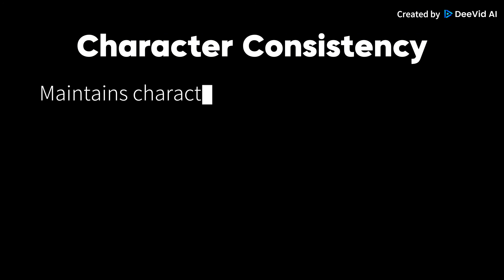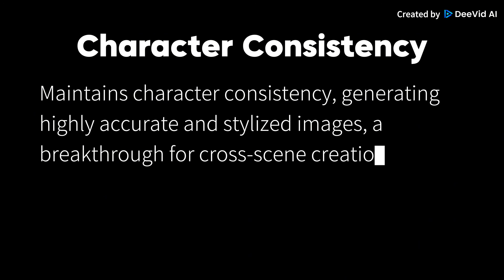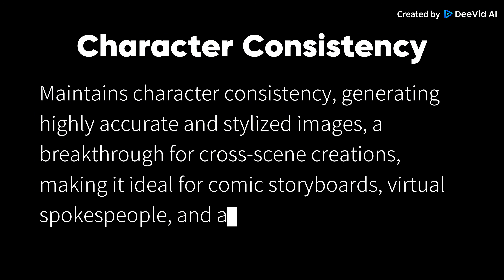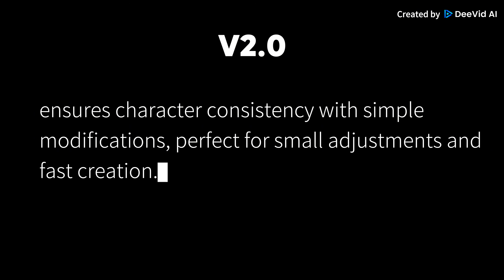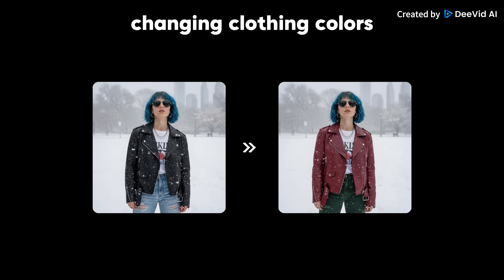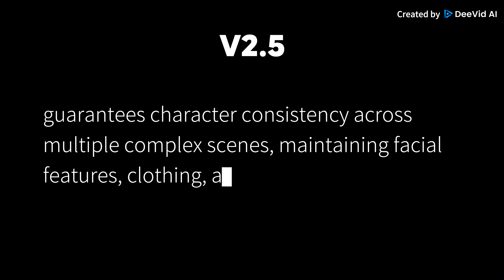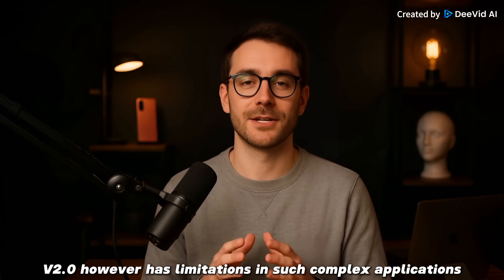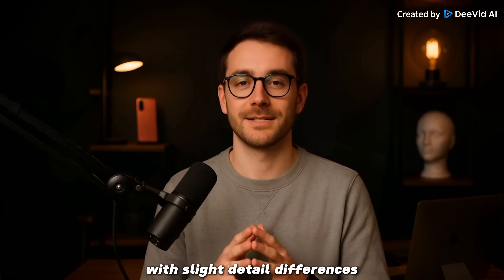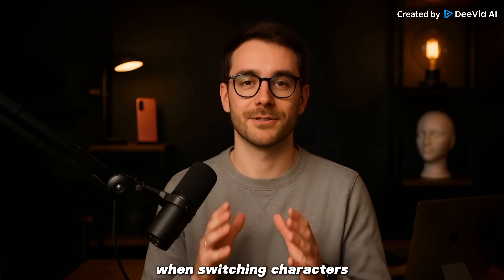Character consistency: V2 maintains character consistency, generating highly accurate and stylized images — a breakthrough for creative productions, making it ideal for comic storyboards, virtual spokespeople, and advertising campaigns. V2 ensures character consistency with simple modifications, perfect for small adjustments like changing clothing colors or adjusting backgrounds. V2.5 guarantees character consistency across multiple complex scenes, maintaining facial features, clothing, and actions. V2, however, has limitations in such complex applications, with slight detail differences when switching characters.